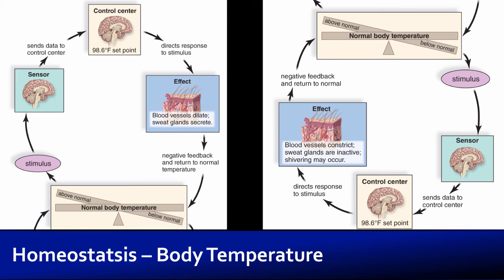Looking at body temperature as an example: we start at a normal body temperature and drift above normal — that's the stimulus. Information reaches our brain, we recognize we're not at the right value, and we need to cool back down to 98.6°F. So we direct a response: we secrete sweat and dilate blood vessels, bringing more blood to the skin. The sweat evaporates, taking heat away from that blood, and we deliver cooler blood back to the core of the body, returning our body temperature to normal.